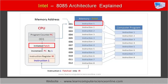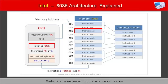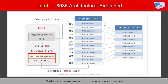As the processor begins the fetch operation for the first instruction, the program counter register is incremented by one at the same time, so that it now points to the address of the next instruction to be fetched from memory. The second register is the instruction register, IR. The instruction register is an 8-bit special purpose register used by the processor to store the part of the instruction that needs to be decoded by the decoder of the control unit.